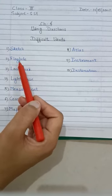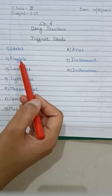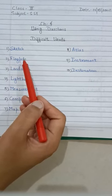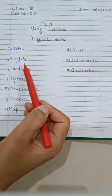The second word is flagpole. F-L-A-G-P-O-L-E, flagpole. A flagpole is a tall pole on which a flag is hung.